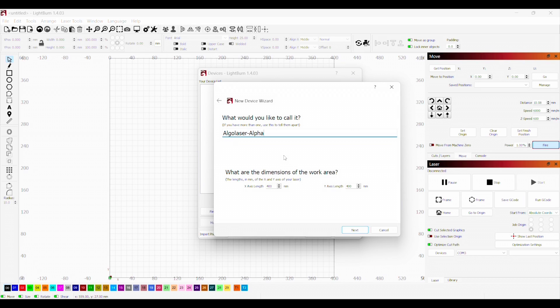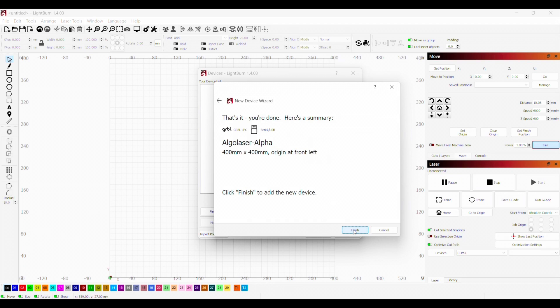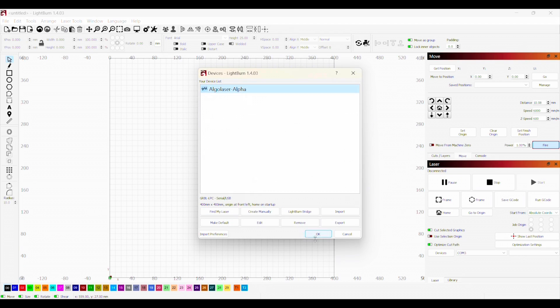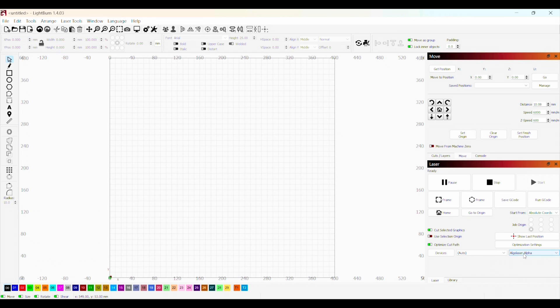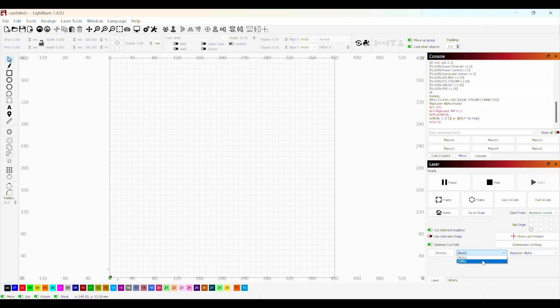Name your laser engraver and the dimensions are already populated. If adding manually it's 400 by 400 and click next to finish the setup. Select your laser engraver name and click ok. Change the drop down from auto to com 3 and it's ready to start engraving.